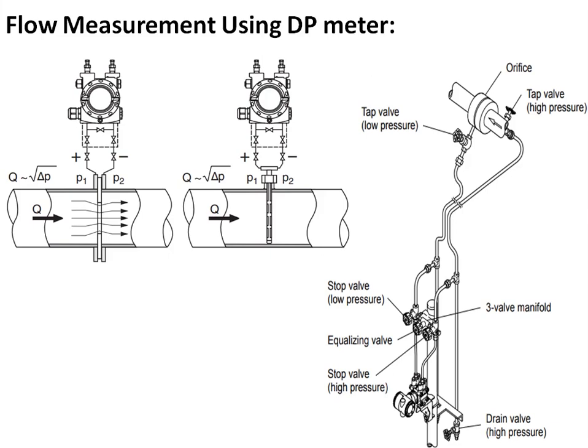The flow rate is proportional to the square root of delta P. The pressure drop in the pipeline caused by the primary sensing element is tapped to the DP transmitter through impulse lines on a three-way manifold.